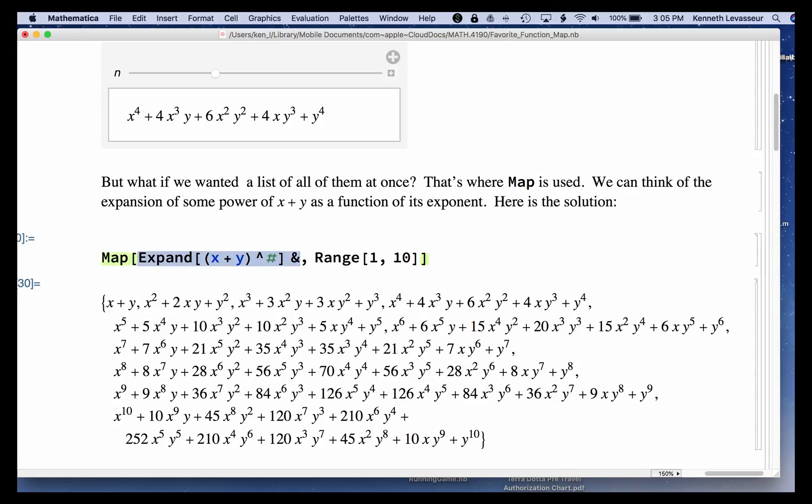Map always takes as its first argument the function. And usually the second argument is a list. And range 1, 10 gives us the numbers from 1 through 10, integers from 1 to 10. And if we evaluate this, we get a whole list, the complete list of expansions of x plus y to powers ranging from 1 to 10.